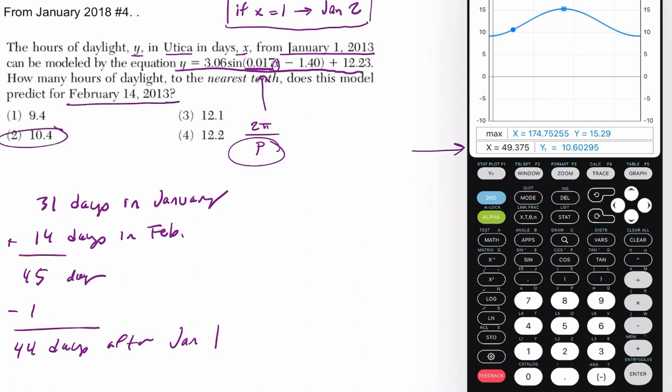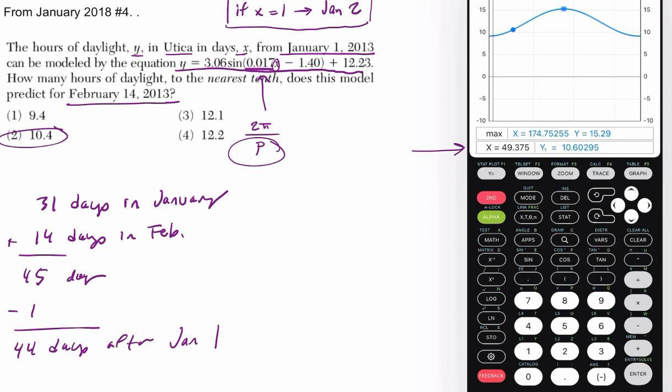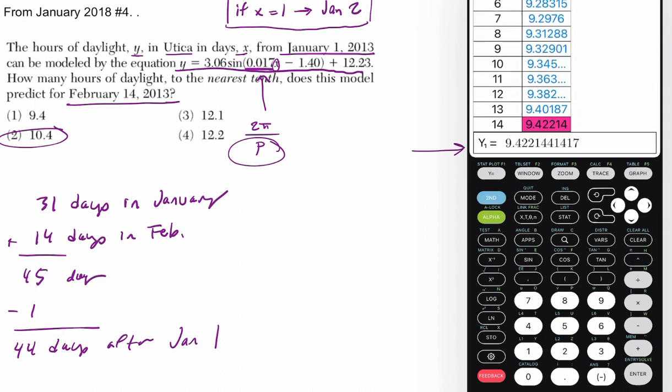And if you look at your table, go to second window. On this app, it just says table goes to 1. That's the increments you're going up by, which is good. You want to go up by days. And then if you go to second graph, you can see the outputs here on the right.